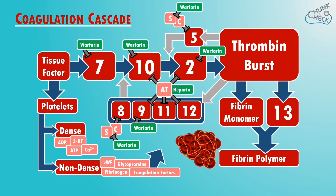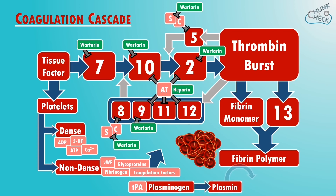When the clot has done its job we have to break it down. This process is called fibrinolysis and is required to limit coagulation and restore blood flow. Thrombin stimulates tissue plasminogen activator, or TPA, which cleaves plasminogen to plasmin. Plasmin then breaks down the fibrin and removes the clot.